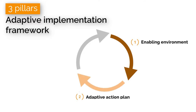The second pillar is an adaptive action plan that covers short, mid, and long-term actions. A stepwise approach of implementation is always useful for continuous learning based on local circumstances and existing capacity. However, in the case of cascading and compound disasters, the action plan essentially should have a long-term vision and adopt a systematic approach of risk management.